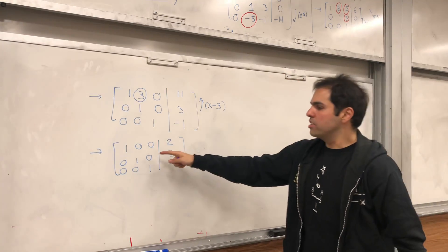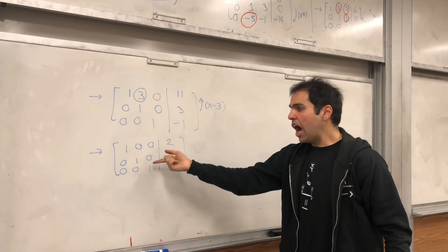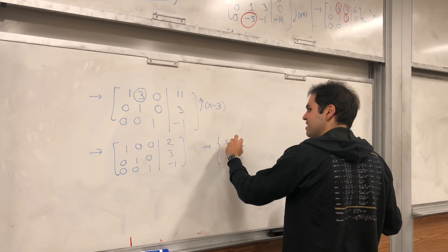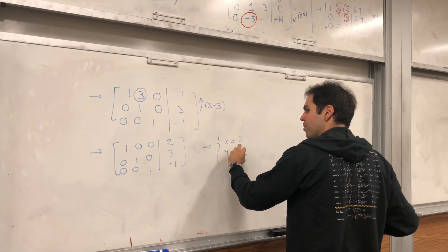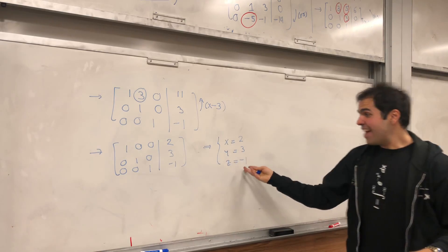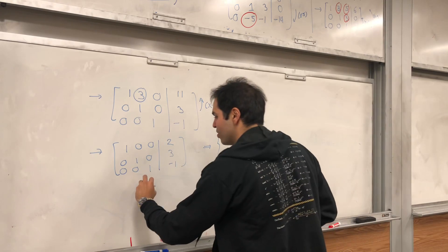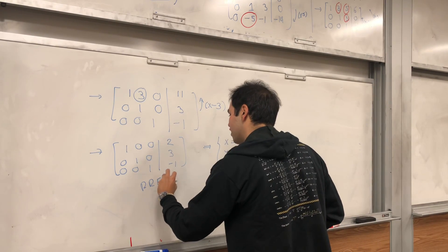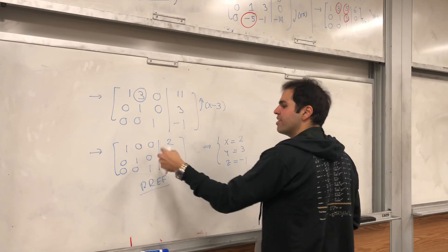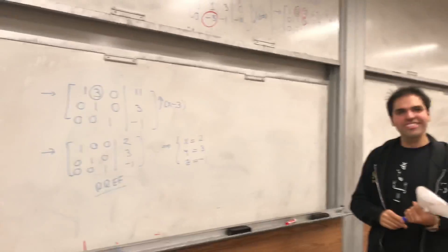So we took this system, wrote this in terms of a matrix. Now let's write it back in terms of the system. But all this tells us is that x equals 2, y equals 3, and z equals minus 1. Whoa! So we directly get the solution here. And lastly, this is what's called the reduced row echelon form, which is the requirement is simply the pivots are 1, and everything above and below the pivots are 0. And that's it. That's how you solve systems of equations.